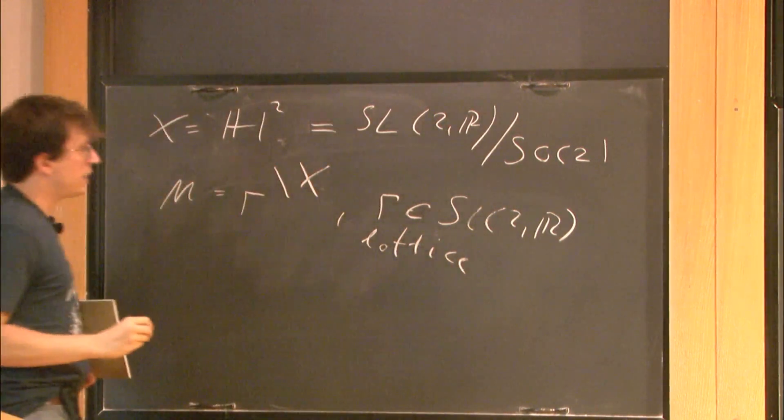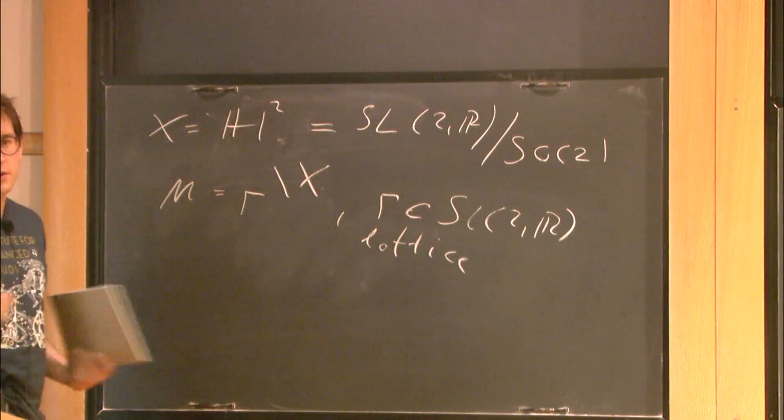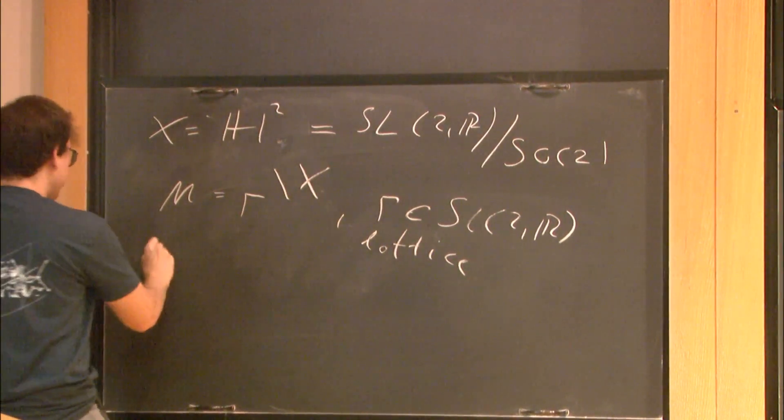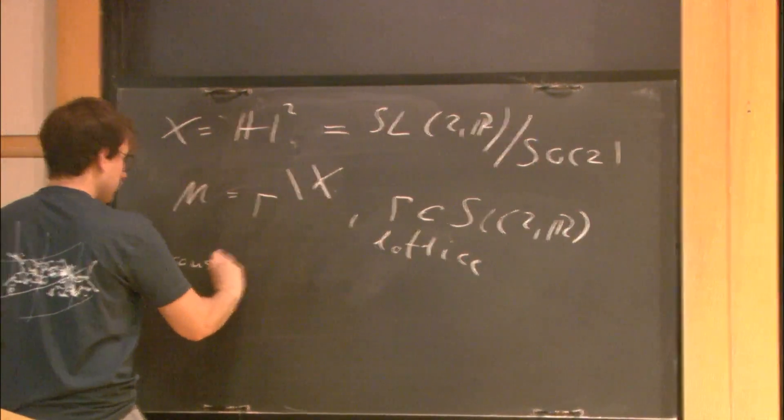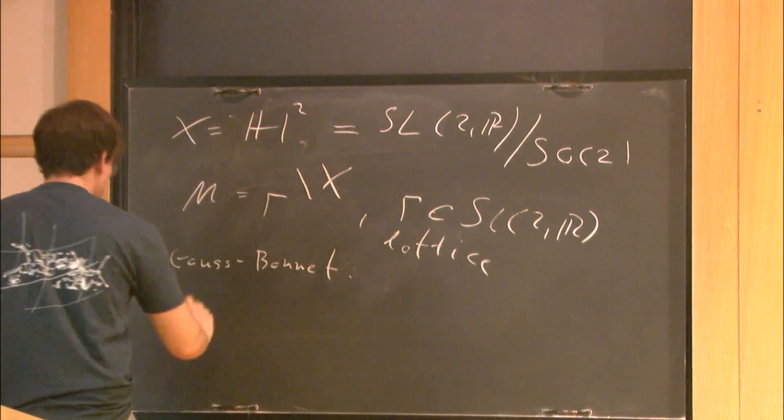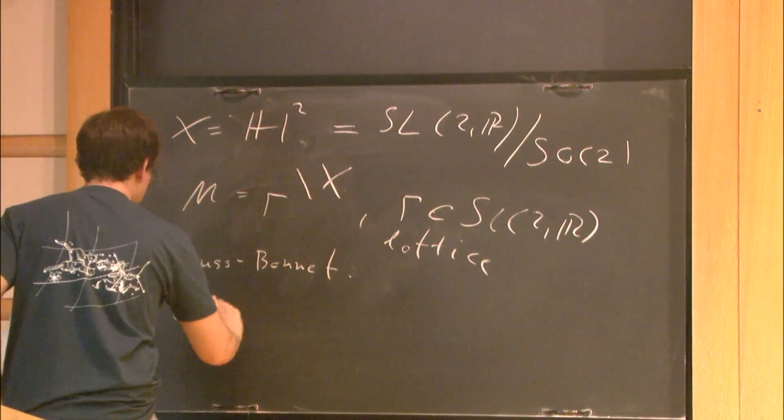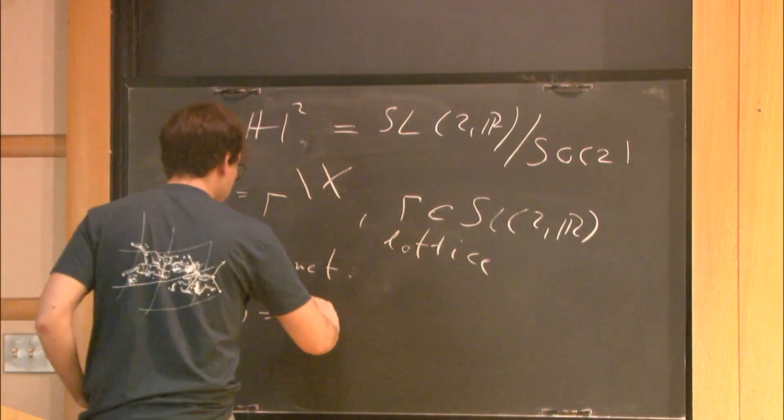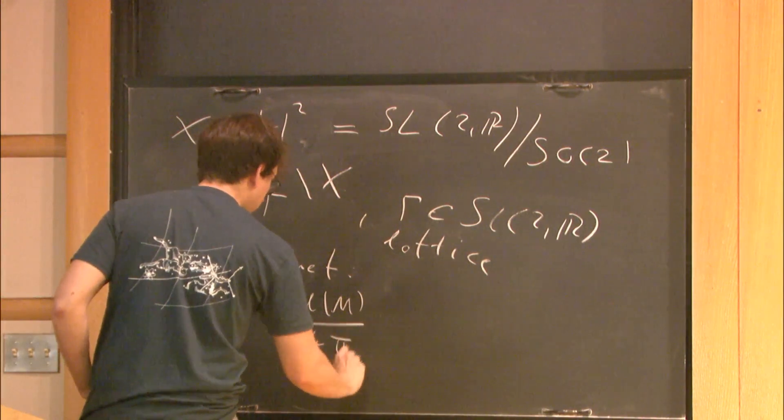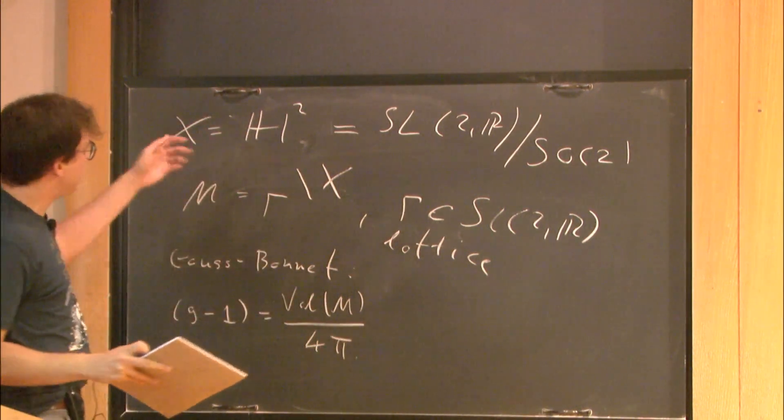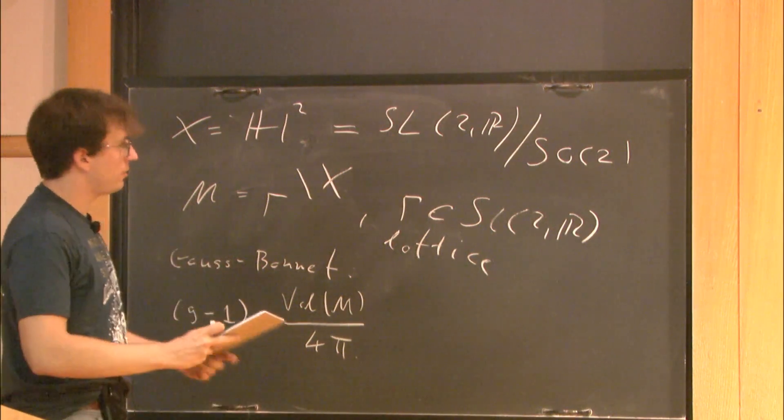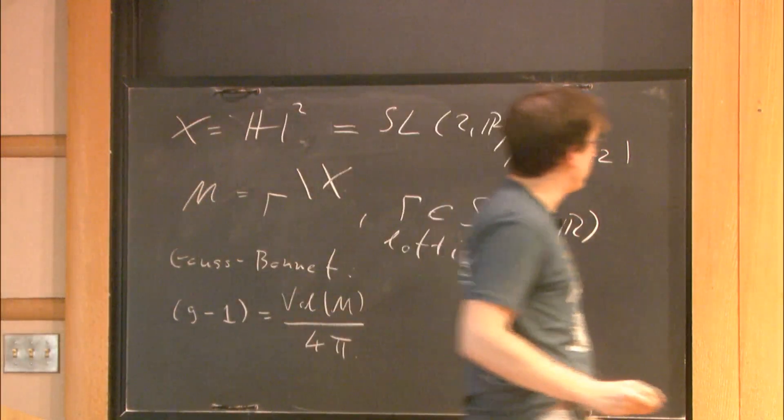In this case, it's easy to see that the volume completely determines the topology, because we have Gauss-Bonnet. It roughly says that genus minus 1 is the volume of manifold divided by 4 pi. Since genus determines completely the topology of the surface, everything is just determined by the volume.